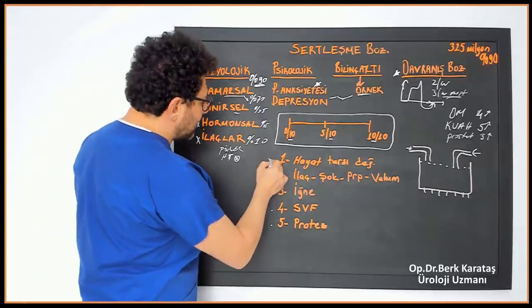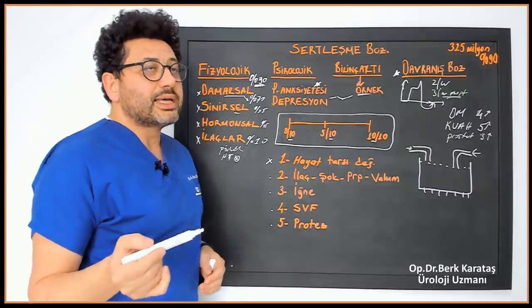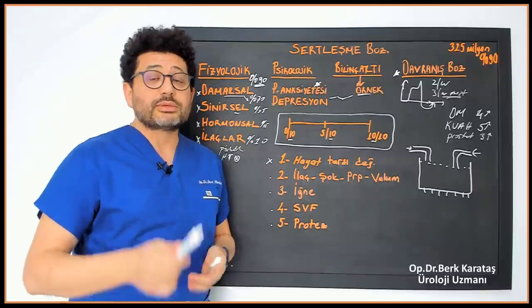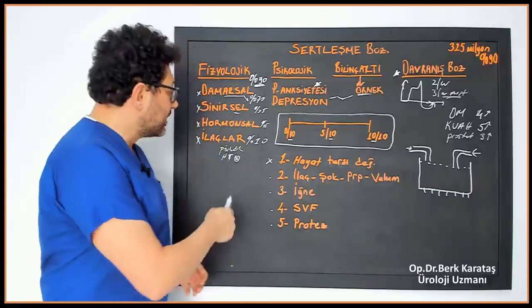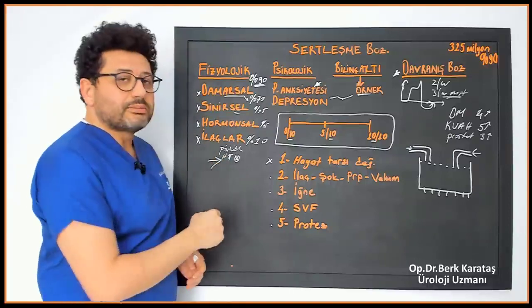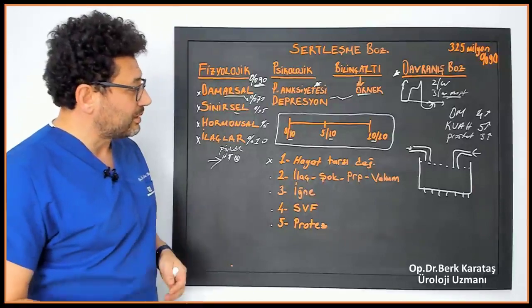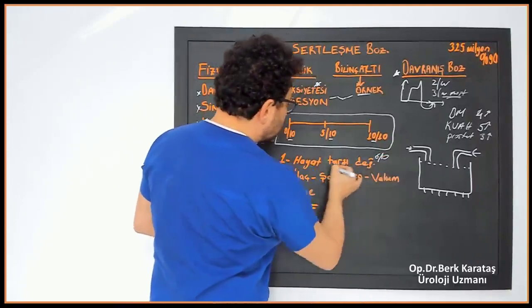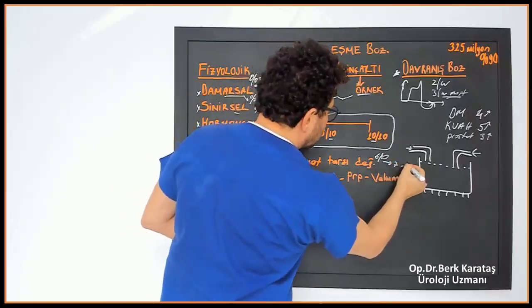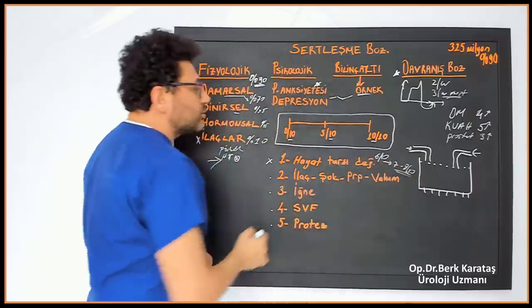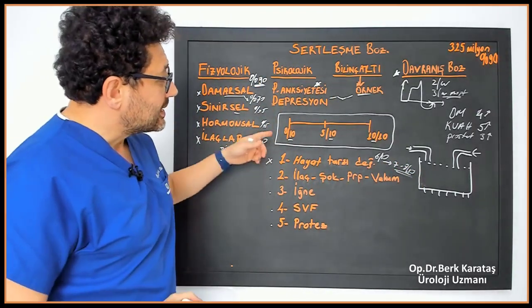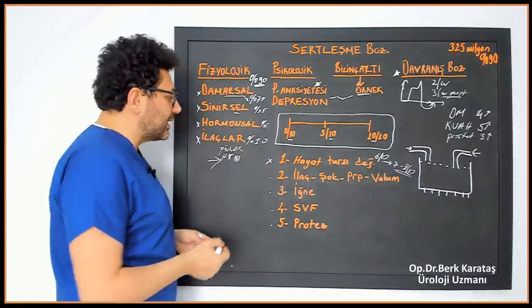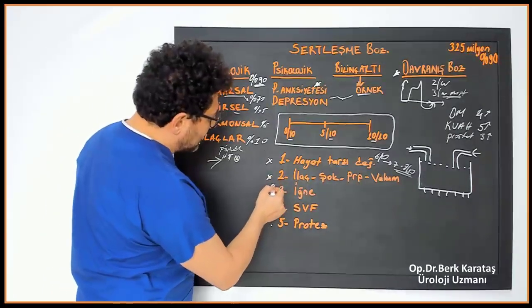Now the first step in treatment is lifestyle change. In other words, a person with erectile dysfunction should quit smoking, quit alcohol, use diabetes medications regularly, lose weight, do sports, visit his cardiologist and say that I want to use blood pressure medications that do not cause erectile dysfunction. This is very important. Let's say a score of 6 out of 10 can be 7 to 8 even with this correction. In other words, even this lifestyle improvement can increase the quality of erection by 20 to 30 percent. Of course, is it enough on its own? Often it's not enough.